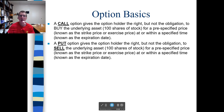A put option is just the opposite. A put option gives the option holder the right, but not the obligation, to sell the underlying stock — again, 100 shares of that underlying stock — for a pre-specified price, again the strike price or exercise price, at or within a specified time.